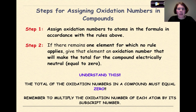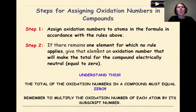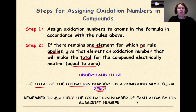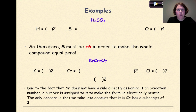Steps for assigning oxidation numbers in compounds: Step 1, assign oxidation numbers to atoms in accordance with the rules — if it's Group 1, it's plus 1; Group 2, it's plus 2; fluorine is minus 1. Go with elements whose charges you're sure of. If one element remains with no rule directly applying, give it an oxidation number that makes the compound electrically neutral, equal to 0. Remember: the total of all oxidation numbers must equal 0, and always multiply each atom's oxidation number by its subscript.